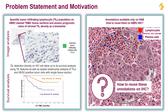Once we have the TIL quantification, we will assess the prognostic value of stromal TILs as a biomarker for patient stratification into high and low surviving groups. In the absence of a functional staining for TILs like CD3 or CD8, TILs are identified as small round cells with homogeneous texture. Traditionally, this task is done on an H&E stained image.